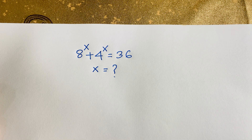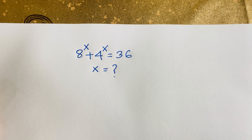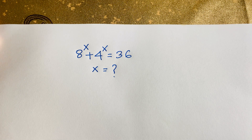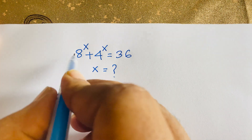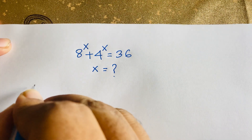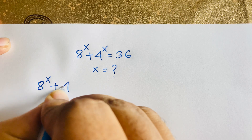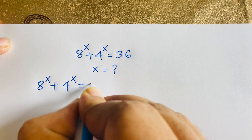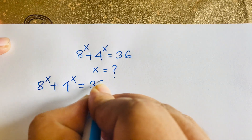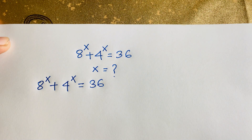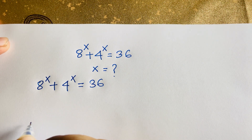Hello everyone. In this video we have solved this interesting math question: 8 to the power x plus 4 to the power x is equal to 36. x is equal to what? How to solve this math question? So let's start. Our question is 8 to the power x plus 4 to the power x is equal to 36. We will find out the value of x in this equation.